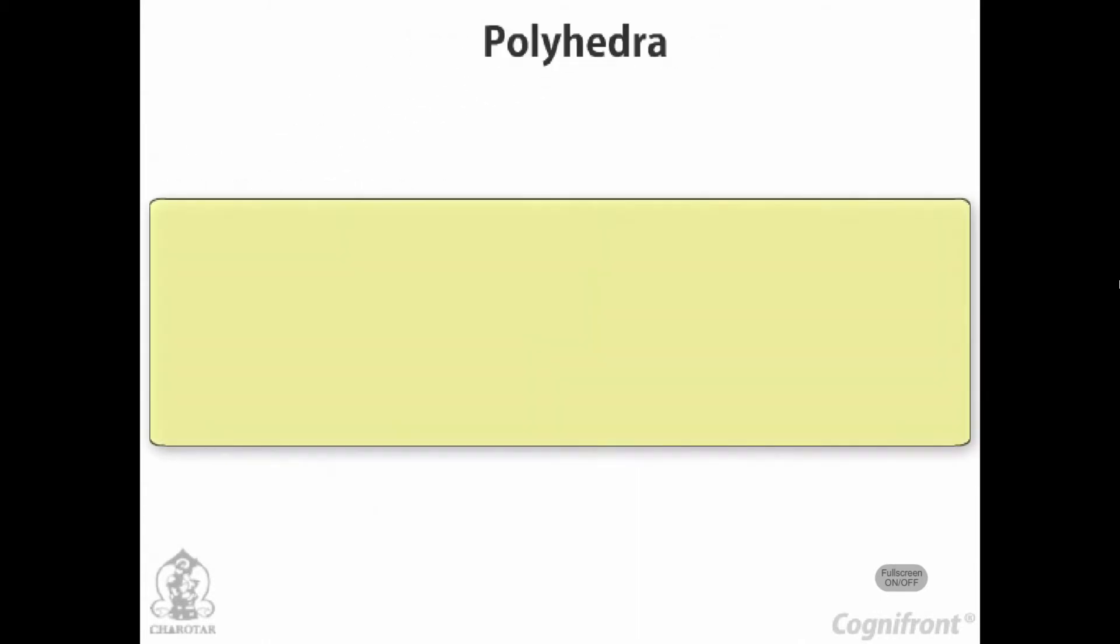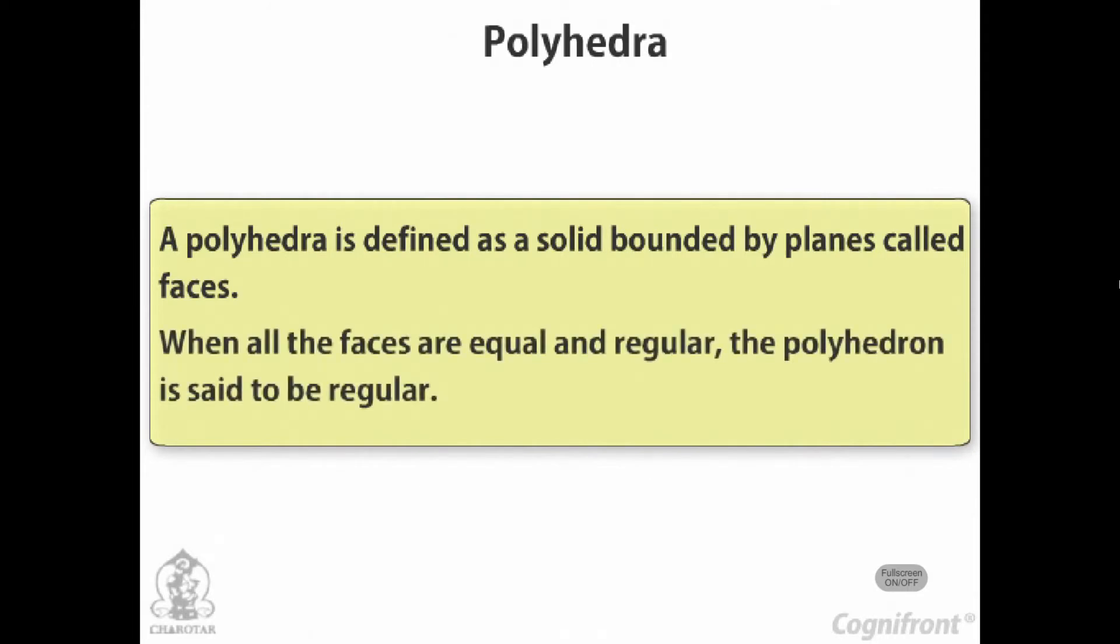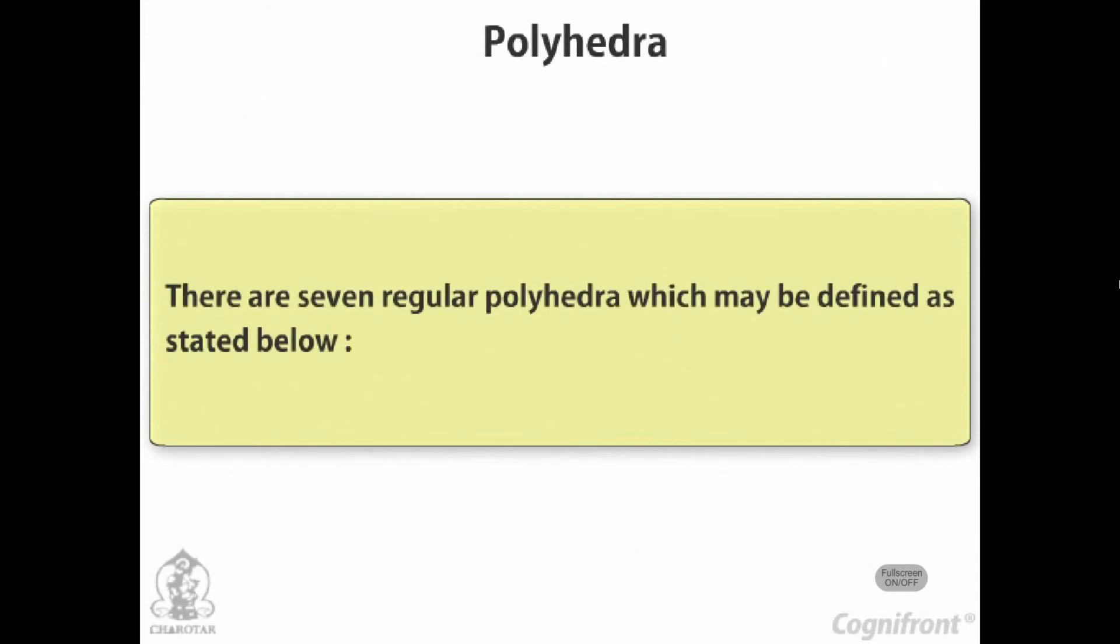Polyhedra. A polyhedron is defined as a solid bounded by planes called faces. When all the faces are equal and regular, the polyhedron is said to be regular. There are seven regular polyhedra which may be defined as stated below.